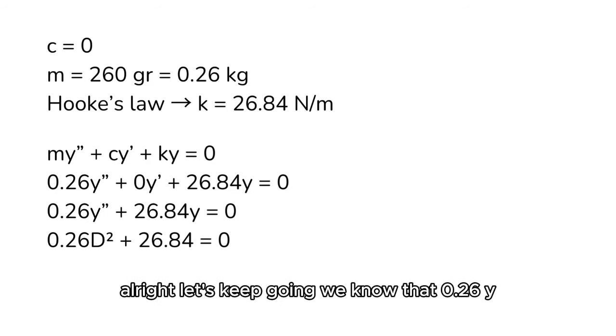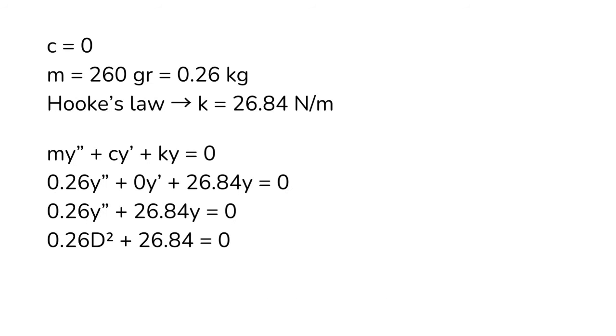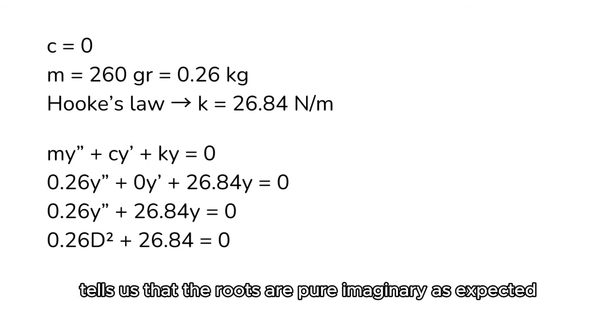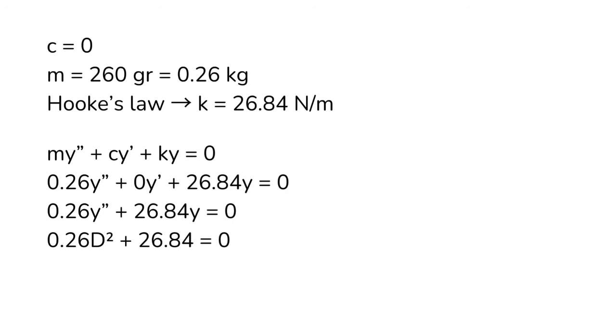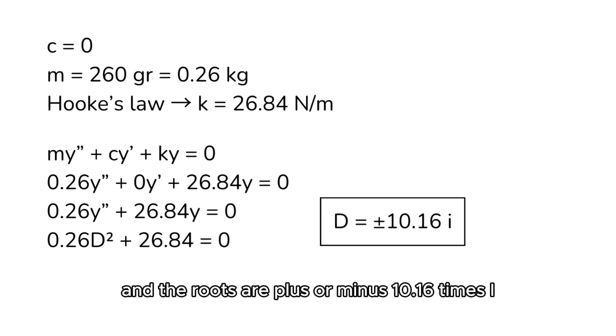Alright, let's keep going. We know that 0.26y double prime plus 26.84y equals zero. This gives us roots that look like this. The characteristic equation is 0.26D squared plus 26.84 equals zero. And the D squared is negative, tells us that the roots are pure imaginary as expected, because we're in a situation where there is no damping. And the roots are plus or minus 10.16 times i.